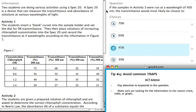It says here, if the samples in Activity 3 were run at a wavelength of 400 nm, the transmittance would most likely be closest to.